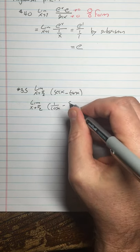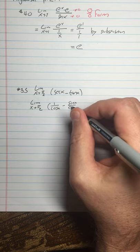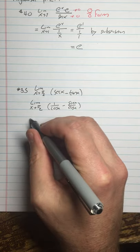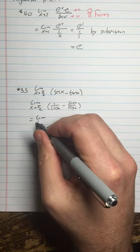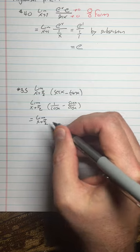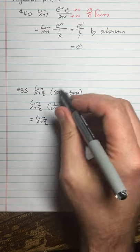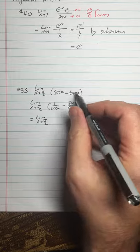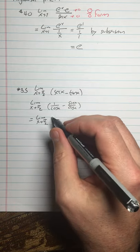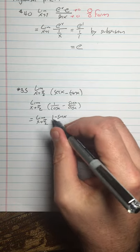So this is 1 over cosine x minus sine x over cosine x. By the way, I have not used L'Hôpital's rule. I haven't done any calculus. I'm just doing trig. I'm just rewriting what the limit is. So this is going to be 1 minus sine x over cosine x.